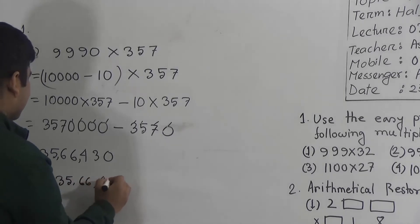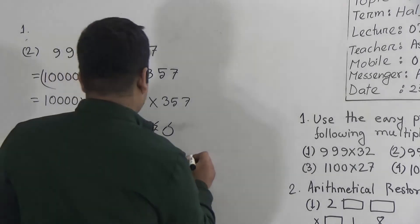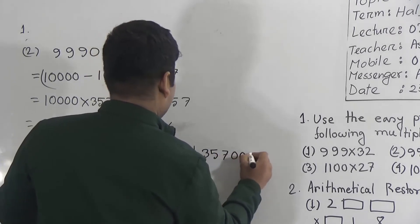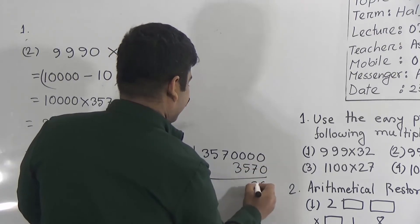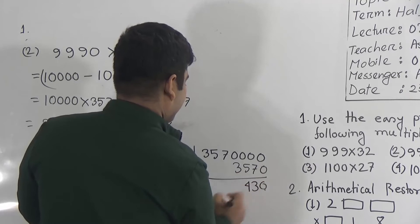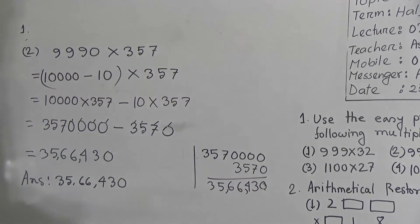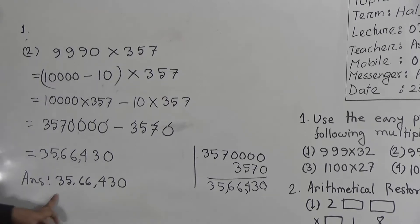I repeat: if you don't do the subtraction this way, you write 3,570,000 minus 3,570. Then 0, 3, 4, 6, 6, 5, 3. So 3,566,430 will be the answer. As our solution is done, we write the answer. Number 2 is done.